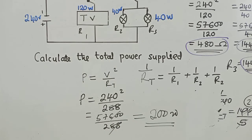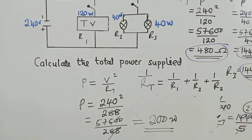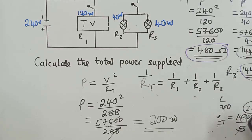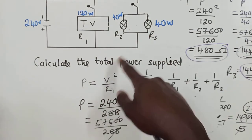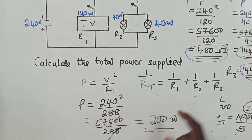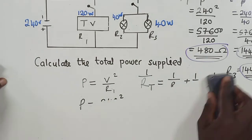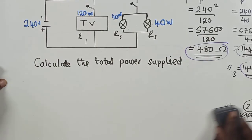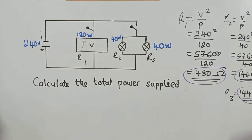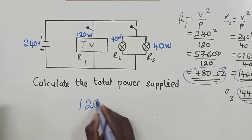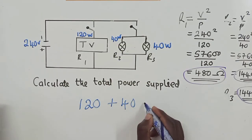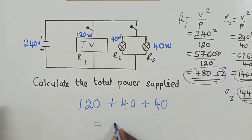If you don't want to go through all those steps, the easiest way to find the total power supplied is to simply add the individual powers. For the TV we have 120 watts, plus the first lamp at 40 watts, plus the second lamp at 40 watts. When you add them they give you 200 watts.